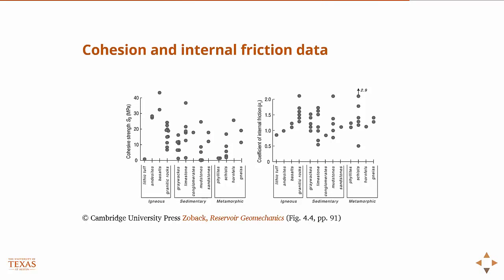And so here's some actual data for the cohesion and internal friction for a variety of rocks. And you can see that some so-called weak rocks, which have very low cohesive strength, can still have a pretty high coefficient of internal friction.